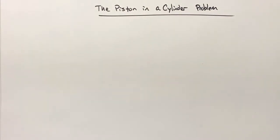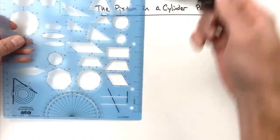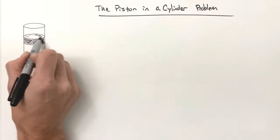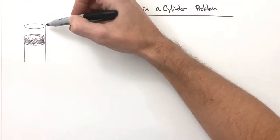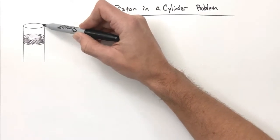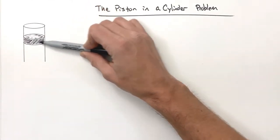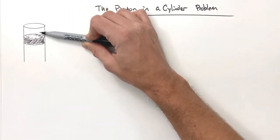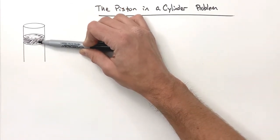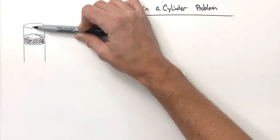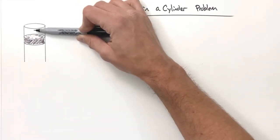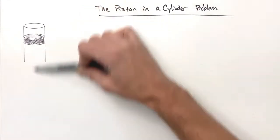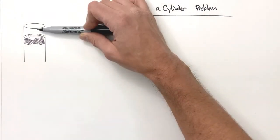Here we have the aptly named piston-in-cylinder problem. What we have is a piston in a cylinder — really any solid object up against a closed chamber confining some gas. This could be a piston in your car moving up and down as ignition occurs, or something as simple as a BB being shot down the barrel of a BB gun.